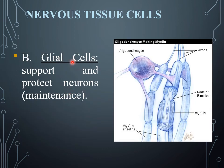Glial cells are those nervous tissue cells that support and protect the neuron. They are involved in the maintenance of neurons and serve as a covering for the neurons.